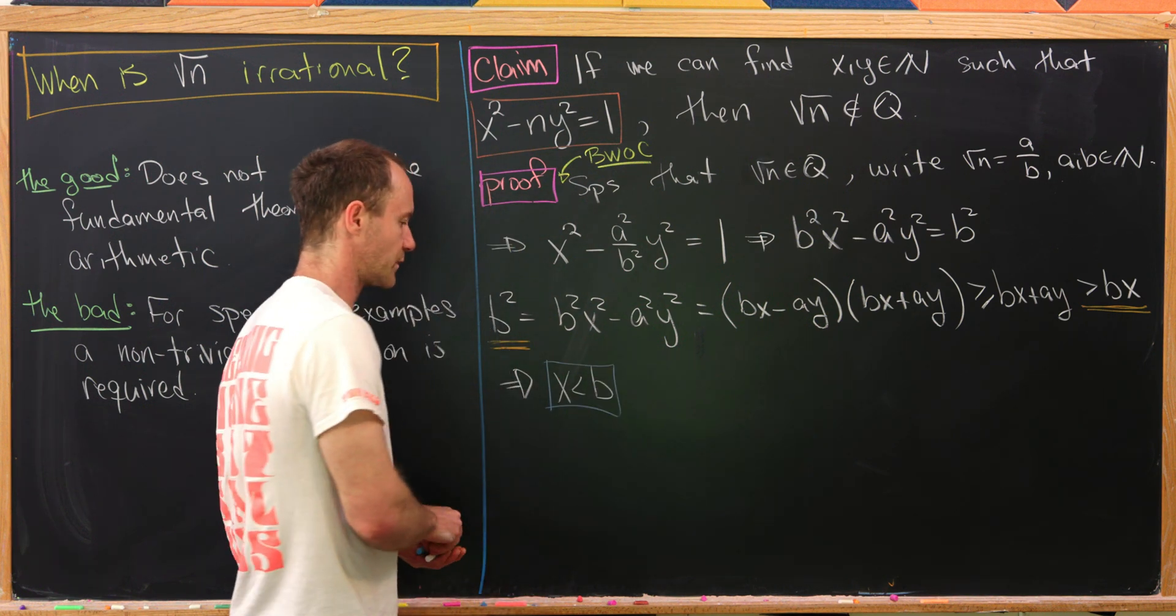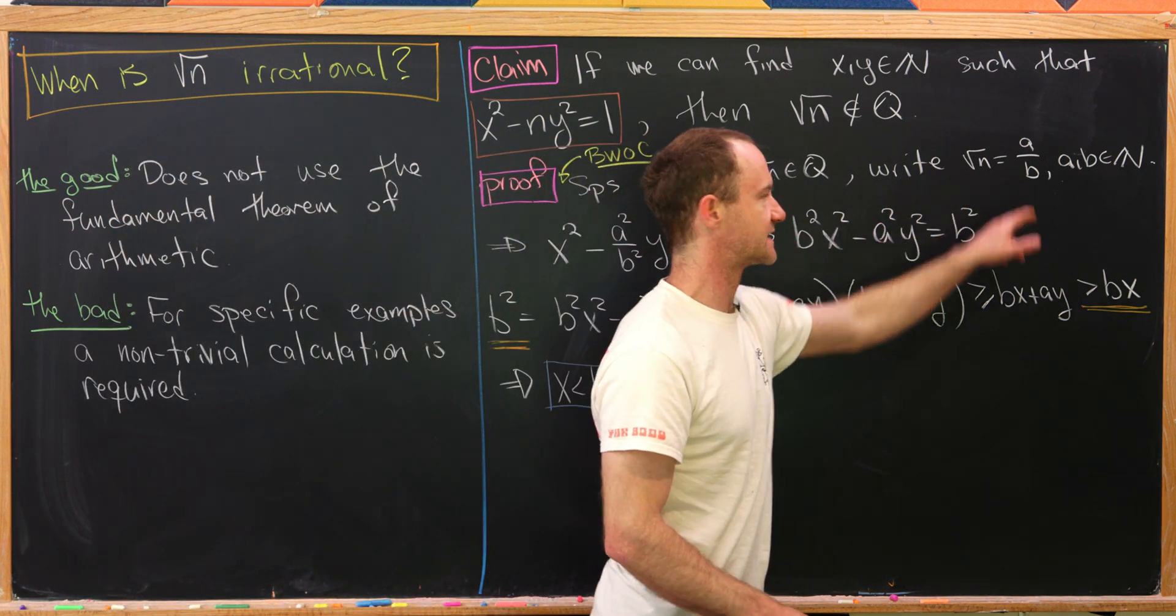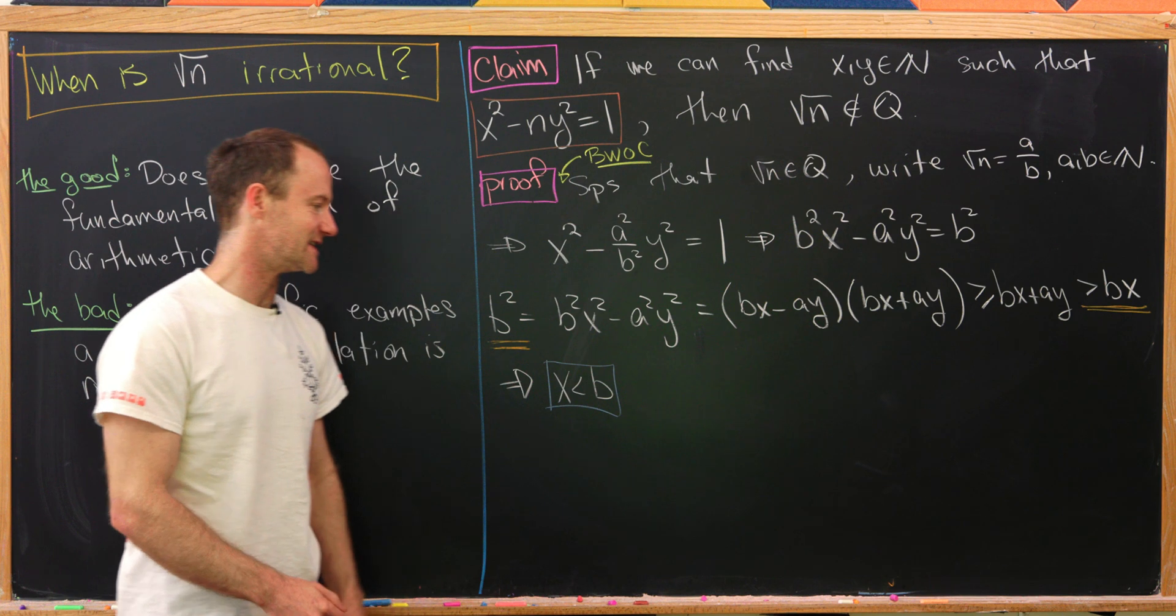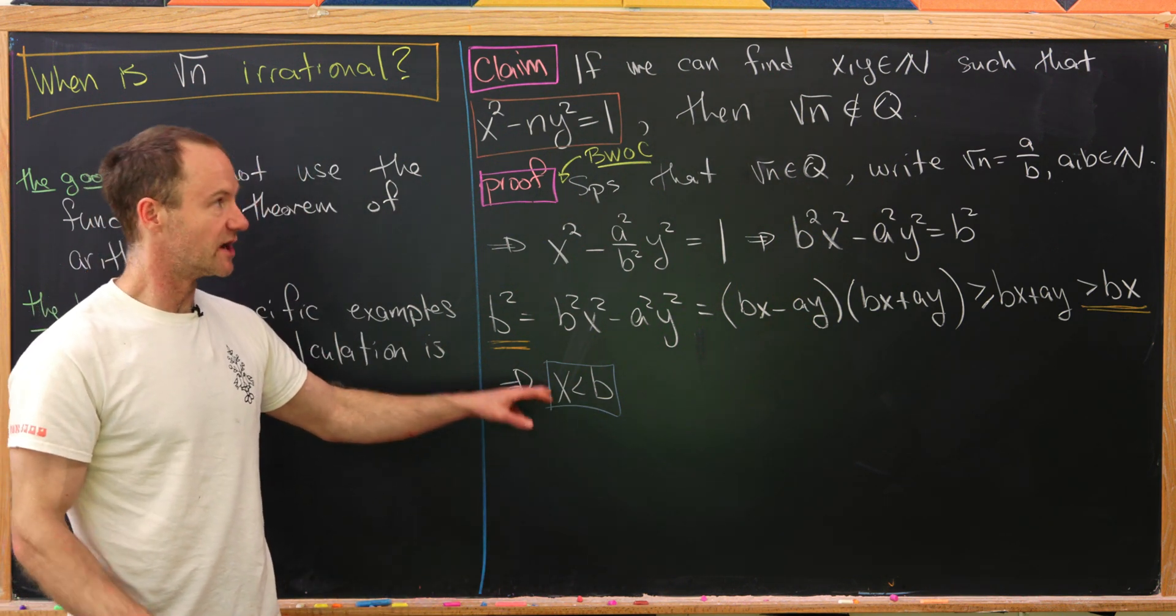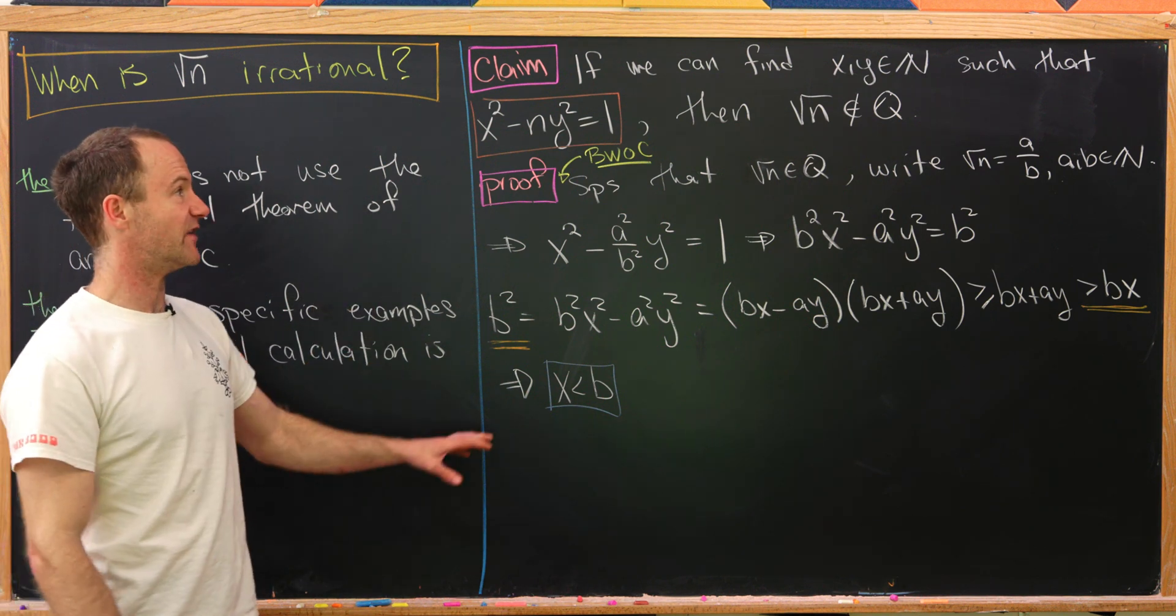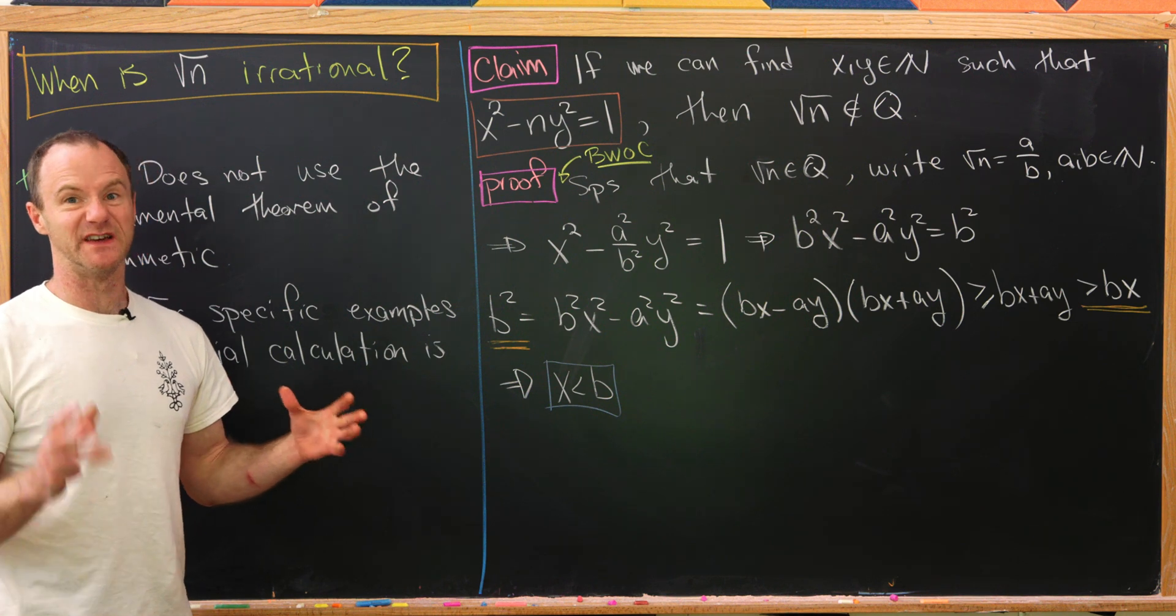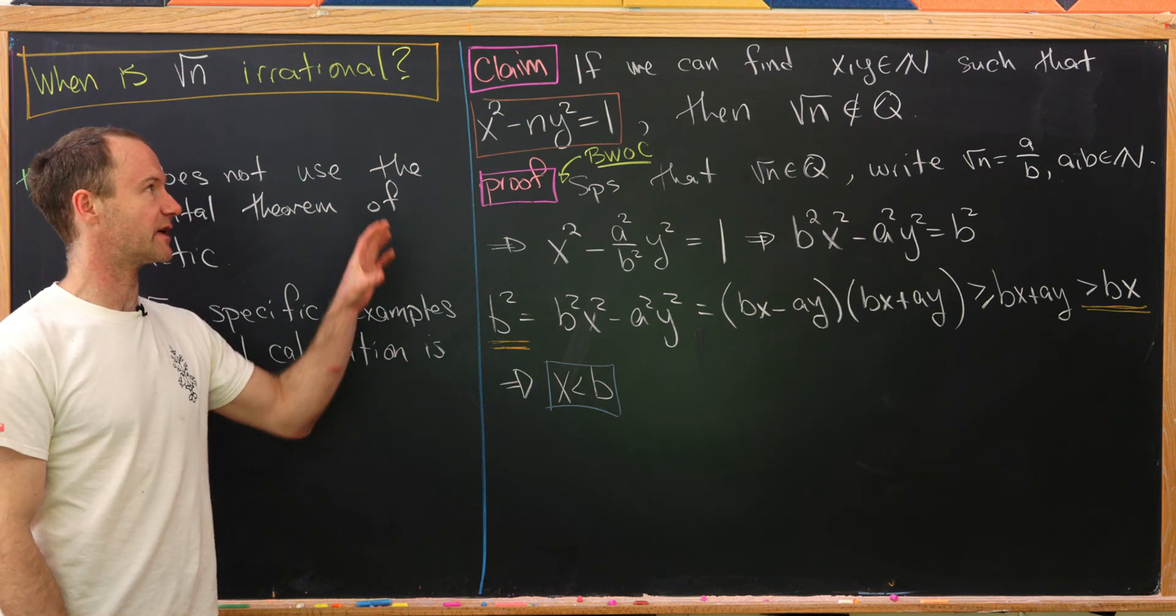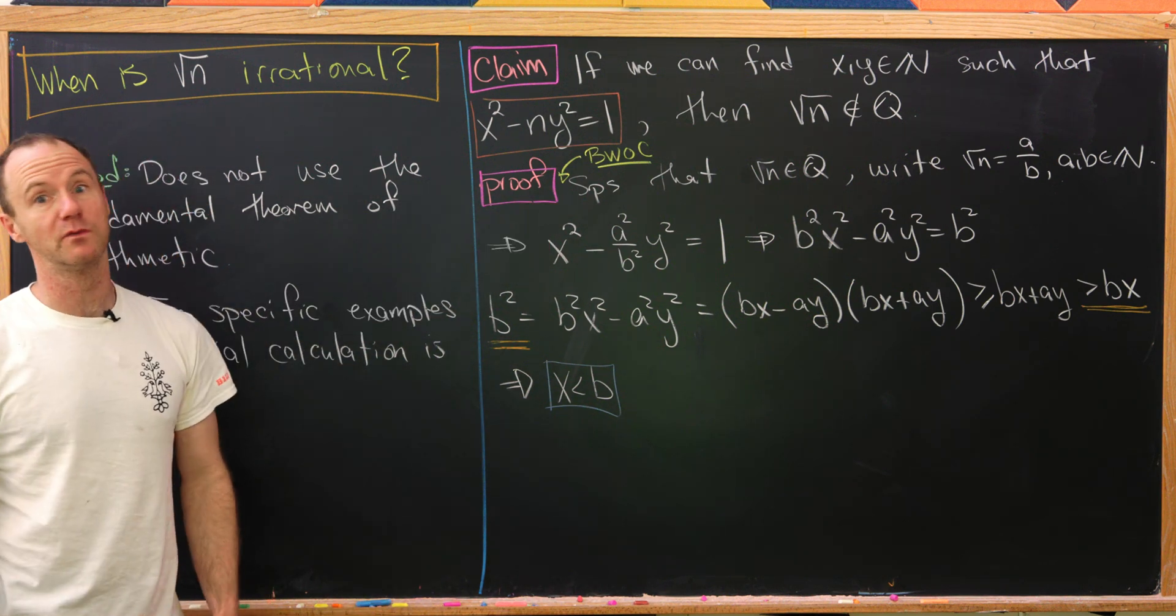What do we mean by that? The expression of the square root of n as a rational number, if you take that denominator, that denominator is larger than the x part of any solution to this equation. That will actually form the seed of our final argument for this claim.